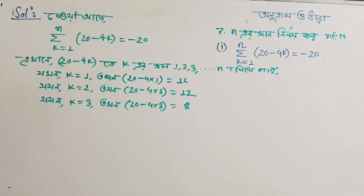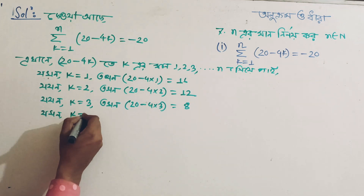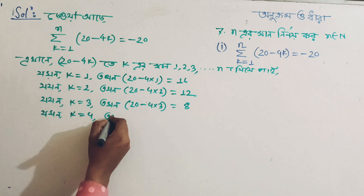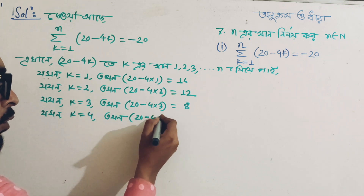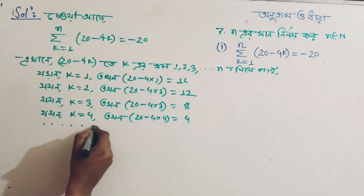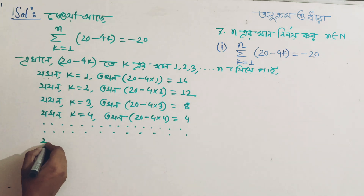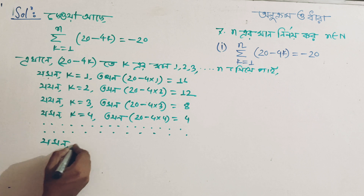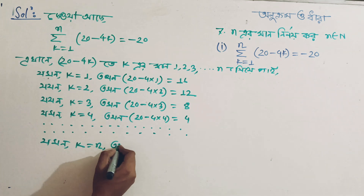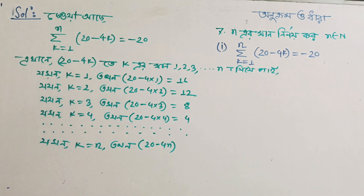Continuing: 20 - 4(4). When k is equal to n, we get 20 - 4(1), 20 - 4(3), and finally 20 - 4n.